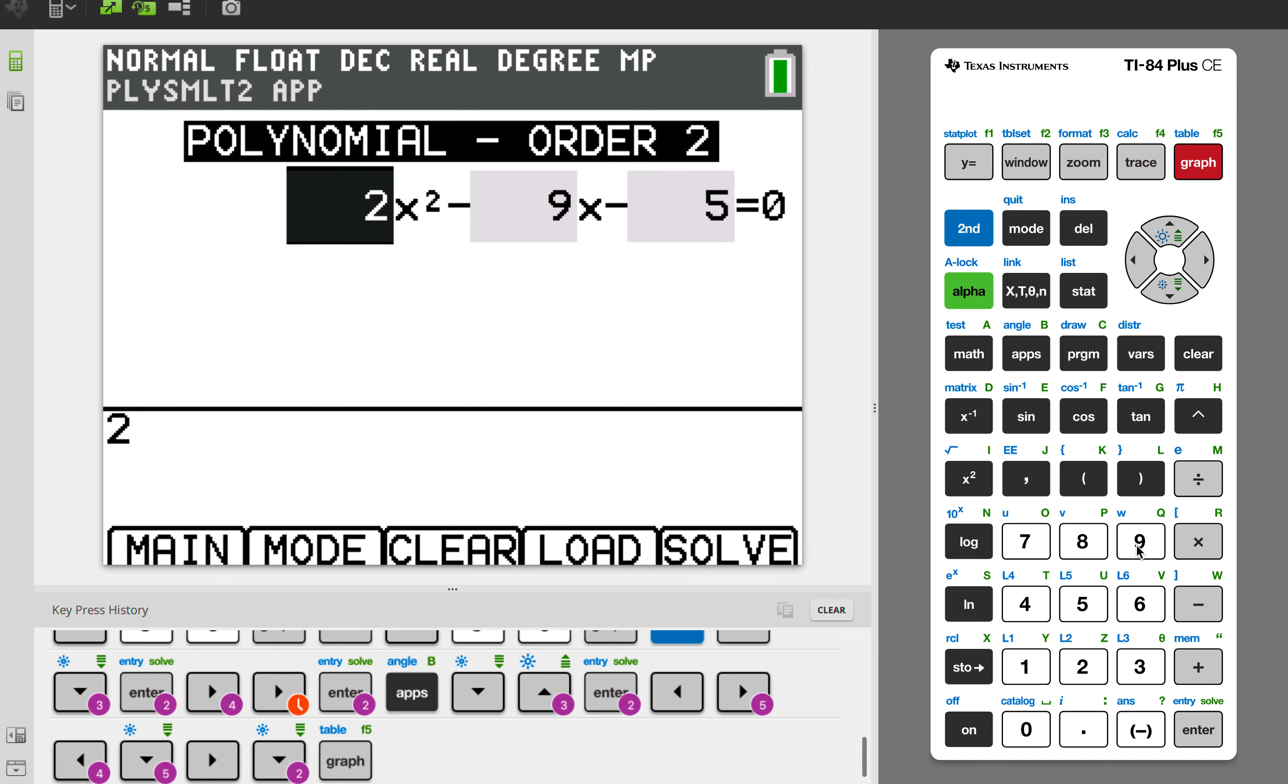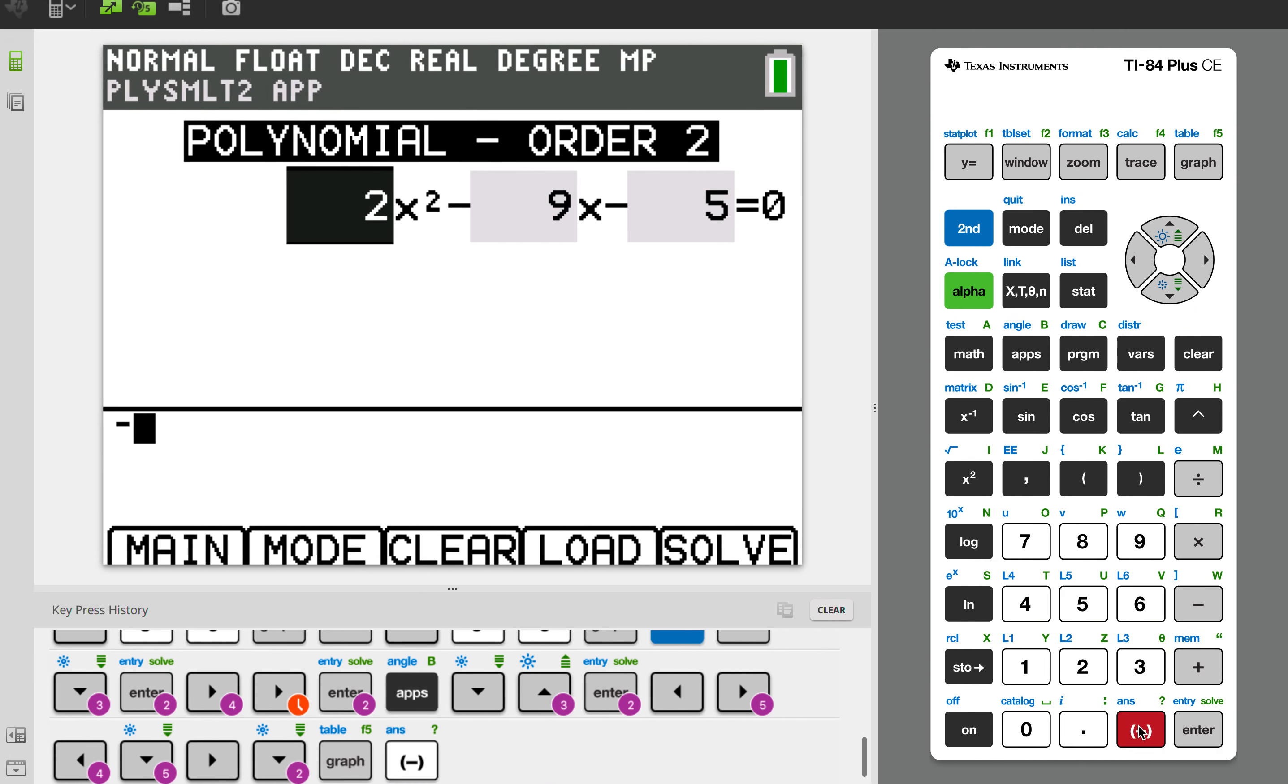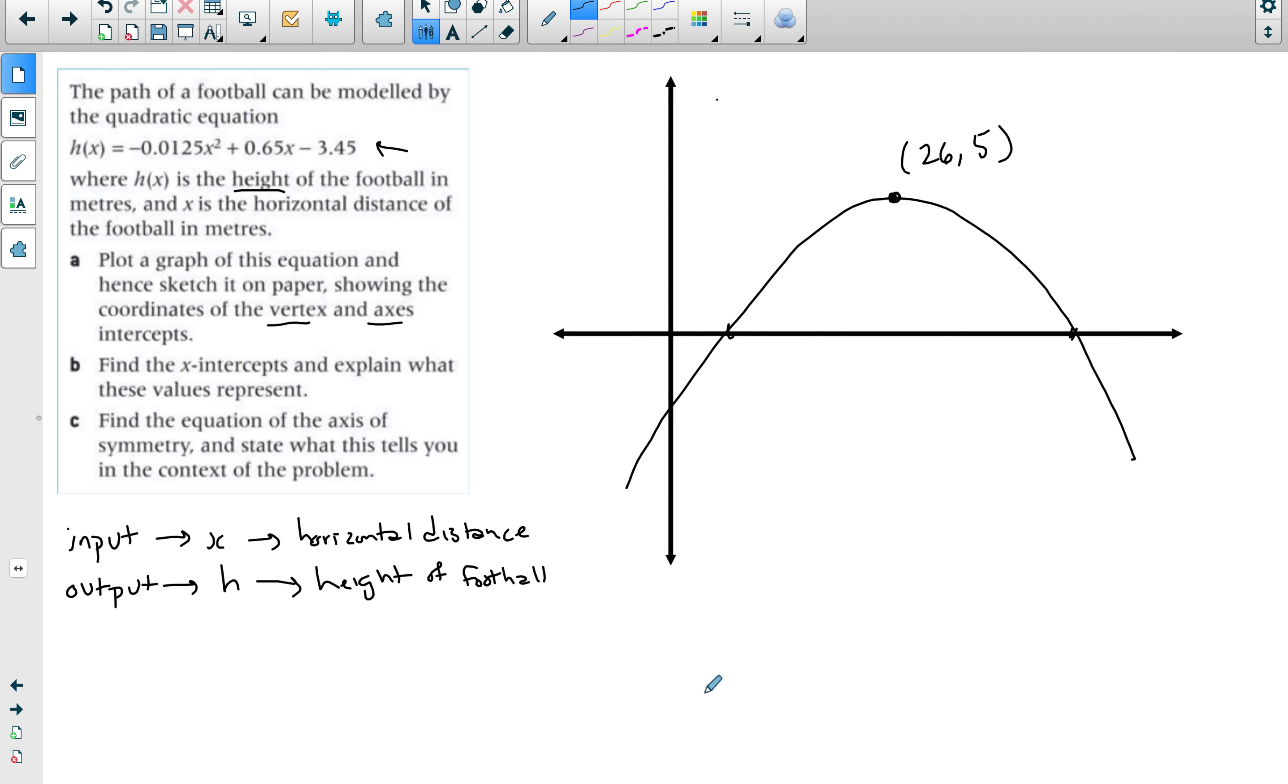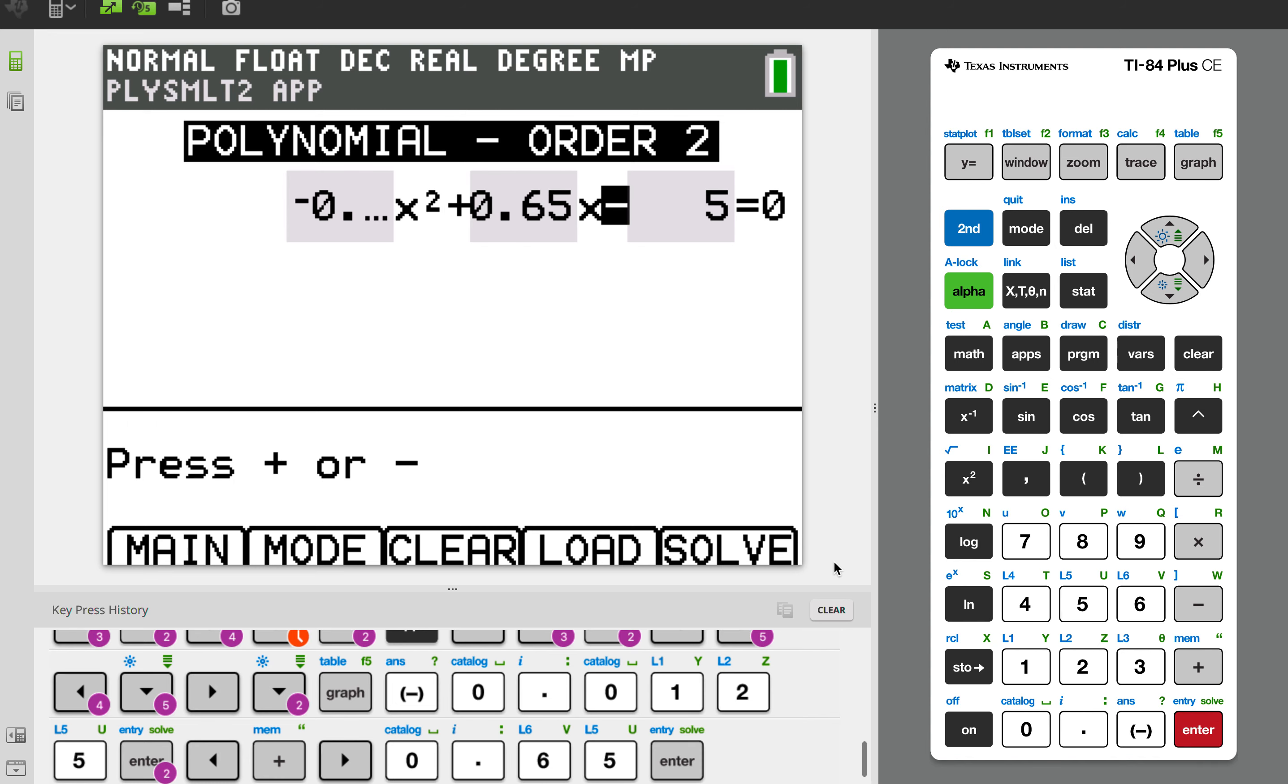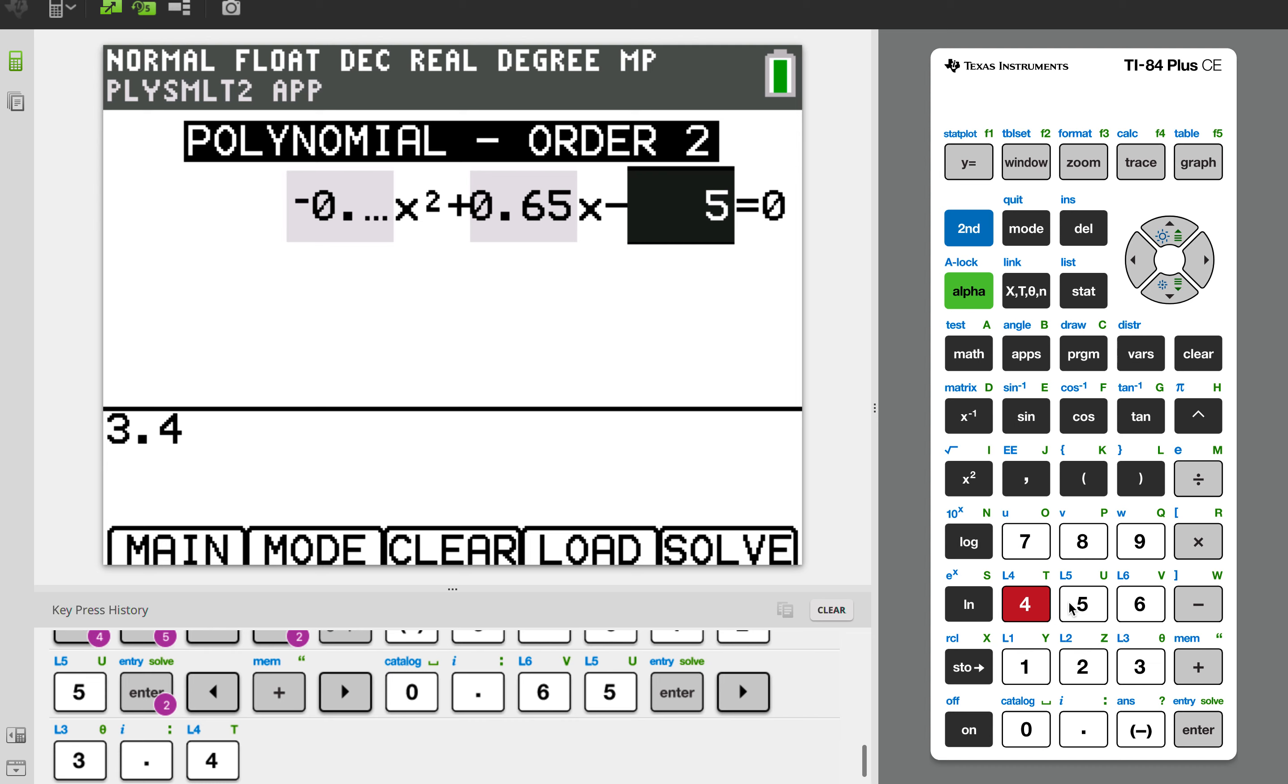You press on graph and then you put in the quadratic that you have. For this question you need to make sure that you put in the correct order, so you have the coefficient of x squared, which is negative 0.0125. Then I'll go to my next value, that's going to be positive 0.65, and then the last value is negative 3.45. Once you have all these you need to solve it and the way to access the solve button is to press on graph.